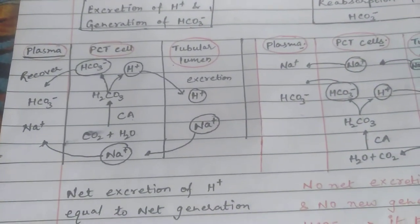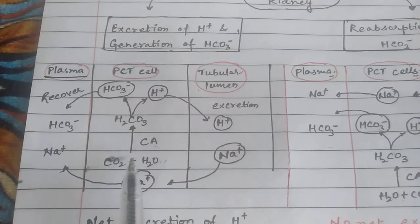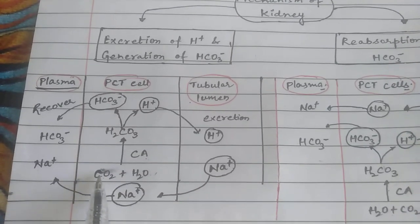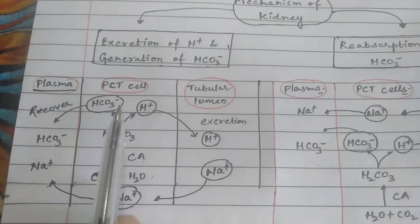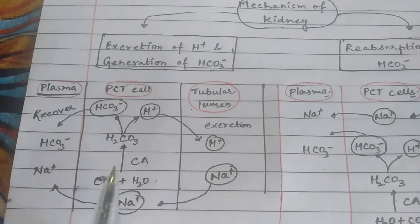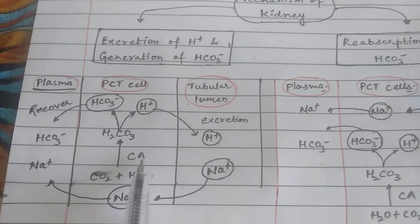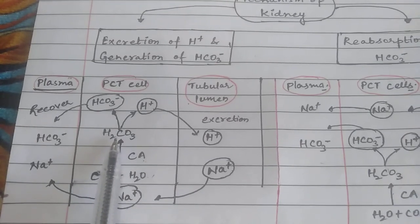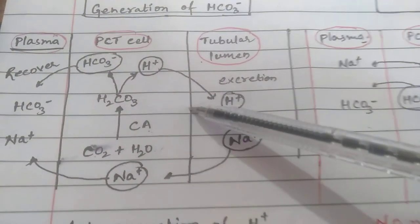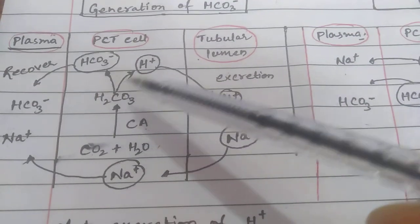First, we discuss the generation of bicarbonate and excretion of H+. During cellular metabolism, carbon dioxide is produced. That carbon dioxide, inside the cells of the proximal convoluted tubules, reacts with water in the presence of the carbonic anhydrase enzyme, forming carbonic acid. From carbonic acid, both H+ and bicarbonate are produced.